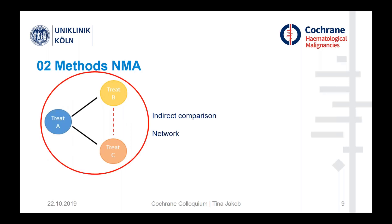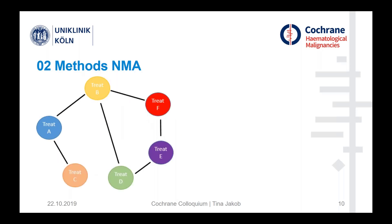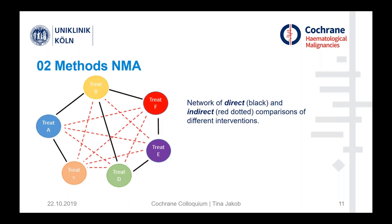This represents our smallest possible network. There can be even more interventions, and we probably have studies that don't compare all of them directly with each other. The black lines indicate where we have evidence through studies. But we also want to know how treatment C compares to treatment F, so we want to compare all of them with each other — giving us both direct and indirect comparisons.